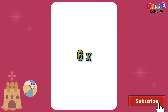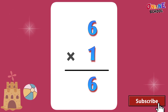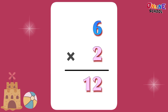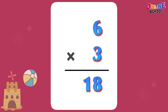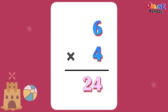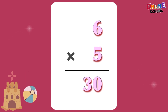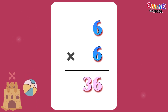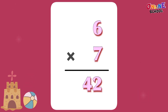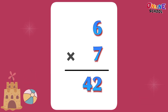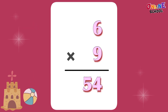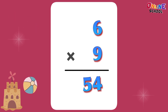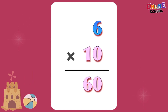6 times 1 equals 6. 6 times 2 equals 12. 6 times 3 equals 18. 6 times 4 equals 24. 6 times 5 equals 30. 6 times 6 equals 36. 6 times 7 equals 42. 6 times 8 equals 48. 6 times 9 equals 54. 6 times 10 equals 60.